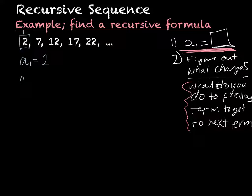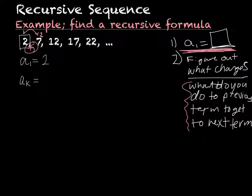Then we have to write A sub K equals what. We're looking to go from our first term to get to our second term. I could add 5 — if I add 5, I get to 7. If I add 5 to go from the second to the third, I get 12. So it does work. I always add 5.